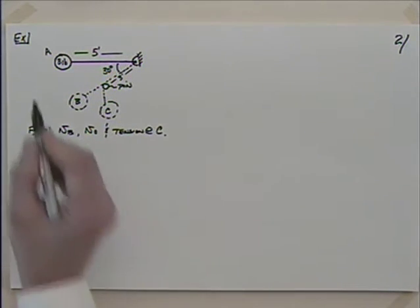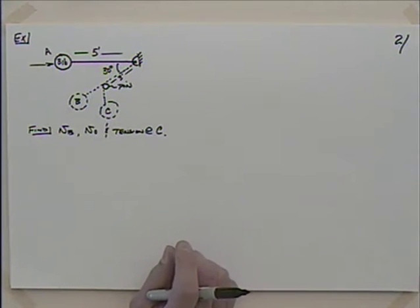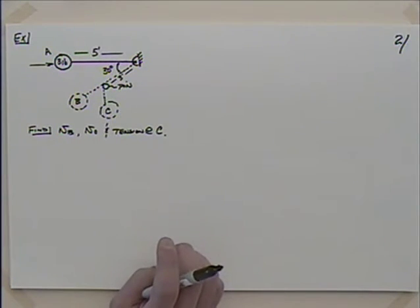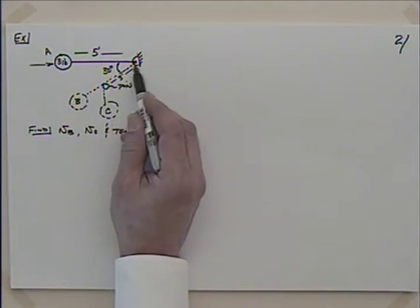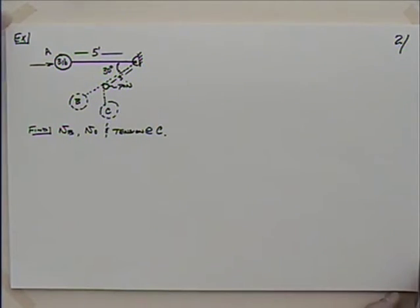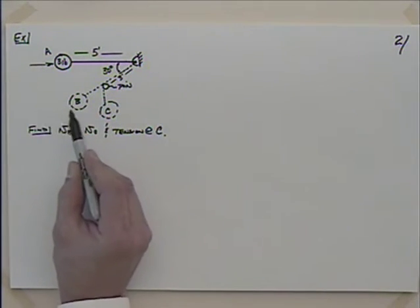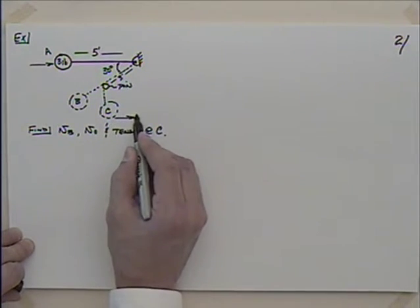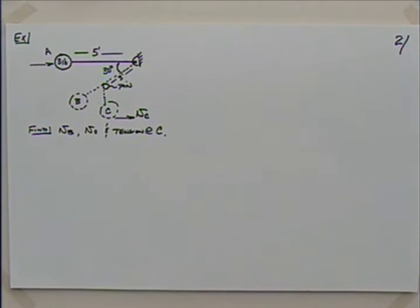We'll spice up this pendulum a little. It's on a five-foot lead, held up horizontally and released at A. When it gets to a 30-degree angle from the horizontal, it just touches a pin. It then starts to wrap around that pin — like tetherball. That's point C. So it goes from A, held horizontally, to B, just barely touching the pin, and then to C, wrapping around it. We'd like to find the velocity at B, the velocity at C, and the tension at C.